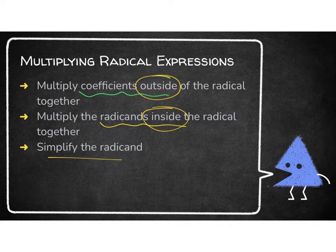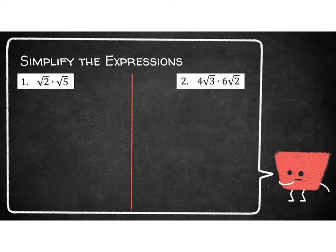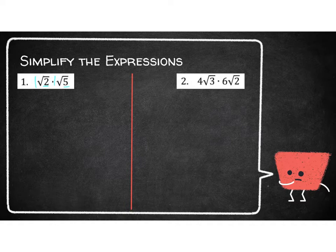So let's do some examples. This should be a pretty simple lesson. Simplify the expressions — I want to look at multiplying the outsides and the insides. So first, the outsides are just 1 times 1, so I don't really need to worry about that. But I do need to put the 2 and the 5 together because they are inside. So 1 times 1 on the outside stays a 1 — I don't need to write that coefficient of 1.